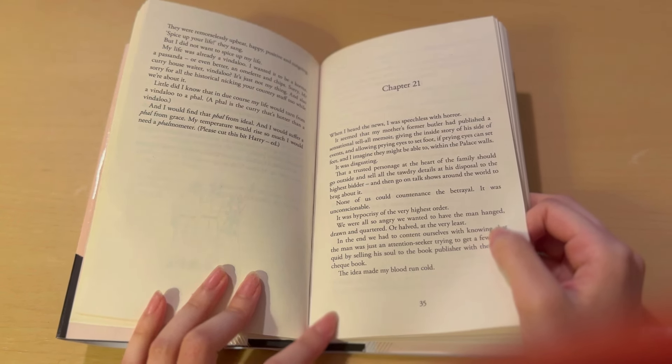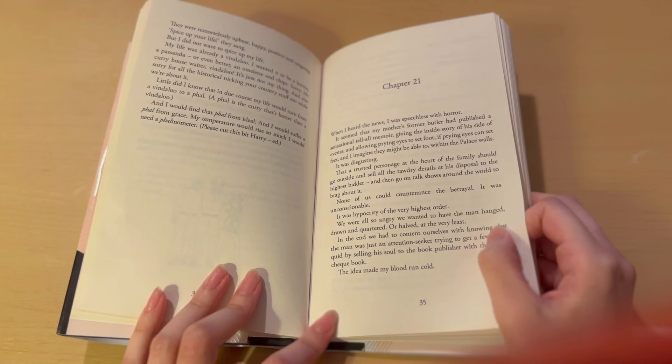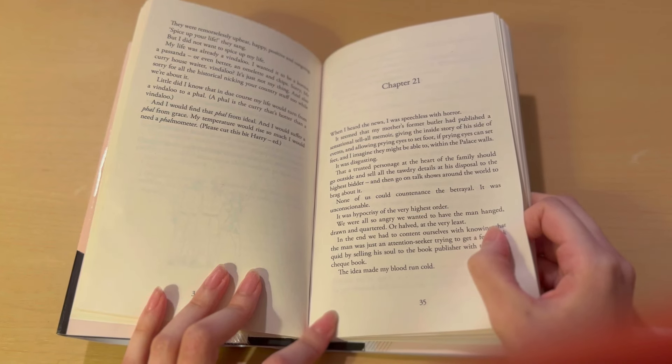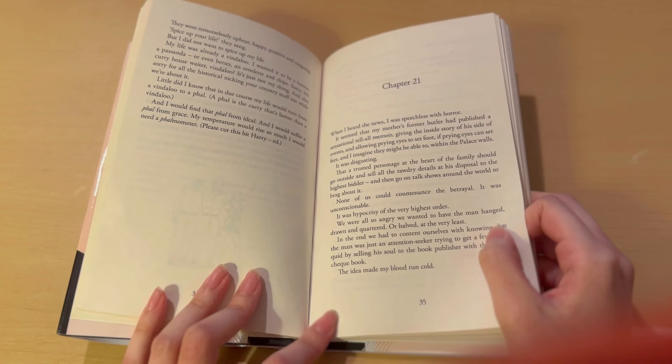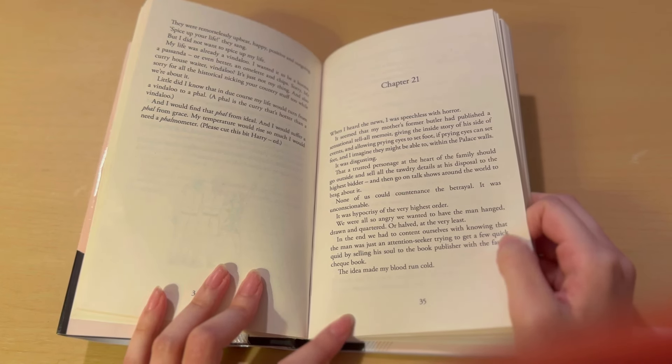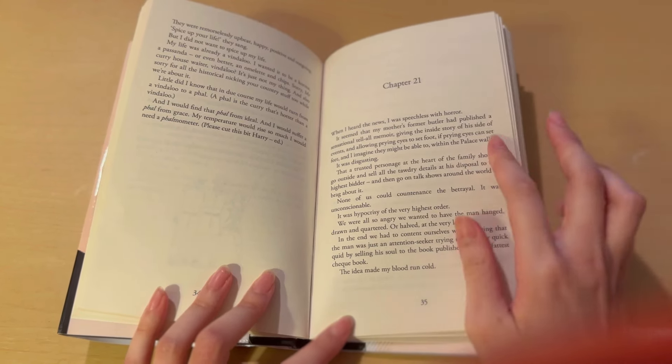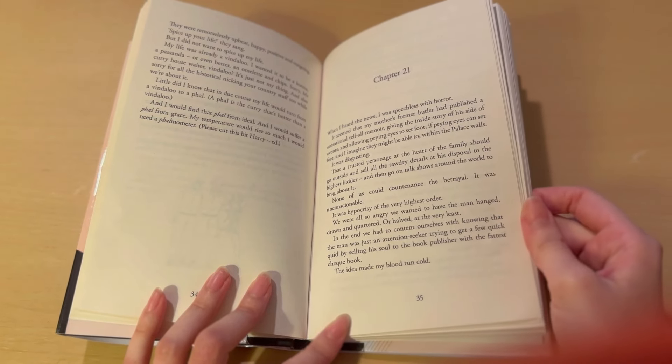When I heard the news, I was speechless with horror. It seemed that my mother's former butler had published a sensational tell-all memoir, giving the inside story of a side of events and allowing prying eyes to set foot. If prying eyes can set feet, and I imagine they might be able to, within the palace walls. It was disgusting. This feels like a very accurate, hairy train of thought, don't you think?